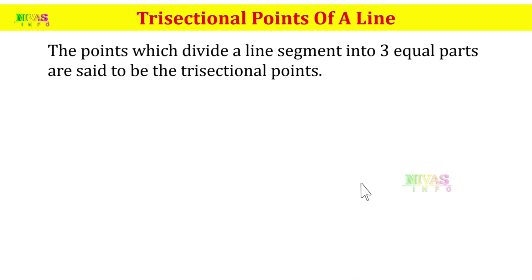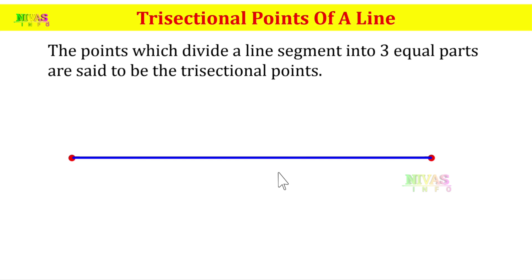What are trisectional points? For example, I divide a line segment into three equal parts. I divide two points. This is a line segment. I divide it into three equal parts. Every point we have has coordinate values, so coordinate values are found out. This is a point, and this is a coordinate value.